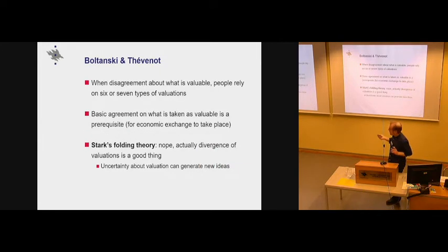And Boltanski and Thevenot think that when there's disagreement about what is valuable, people tend to rely on maybe six or seven types of justifications. And they draw on like the history of philosophy and so on, although it's a bit uncertain whether these are really universal ways of justifying things or of holding things valuable. But that's what they think anyway. And they say that you have to have some sort of a basic agreement about what is valuable for, for example, for economic exchange to take place.